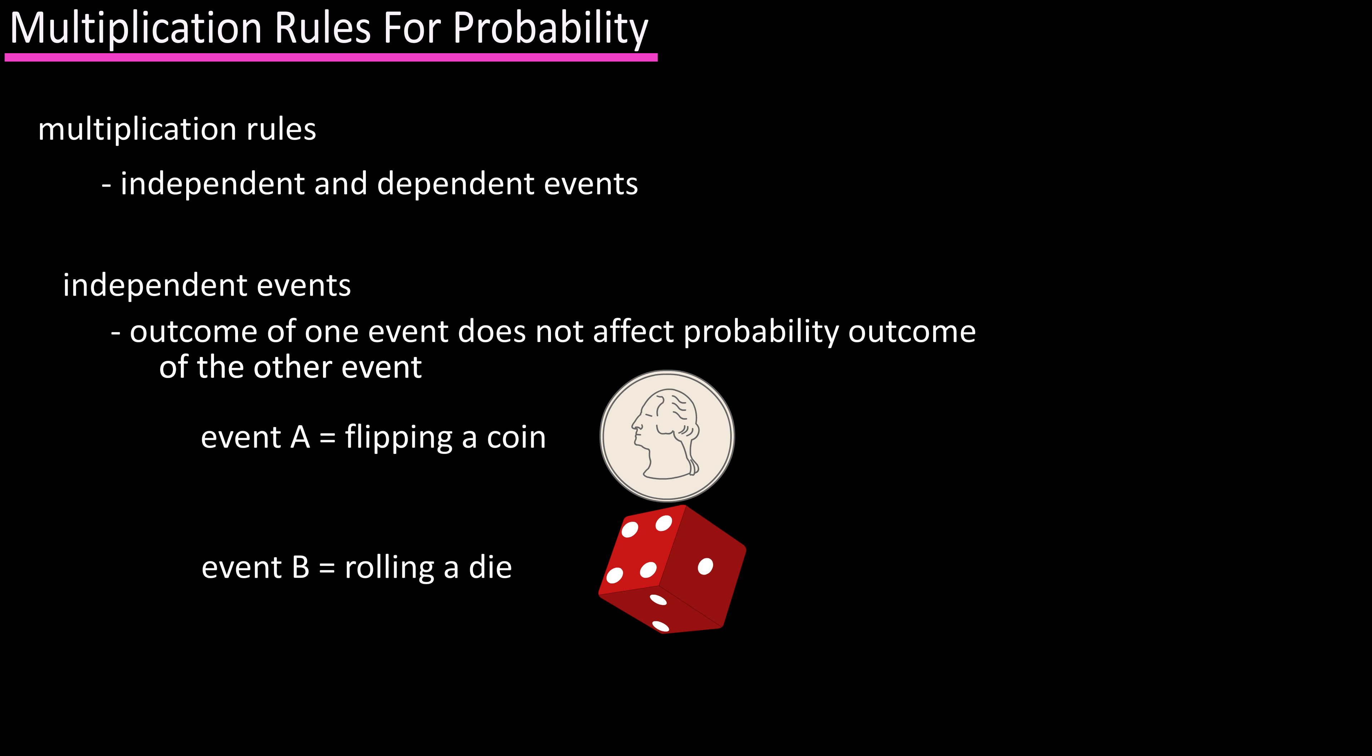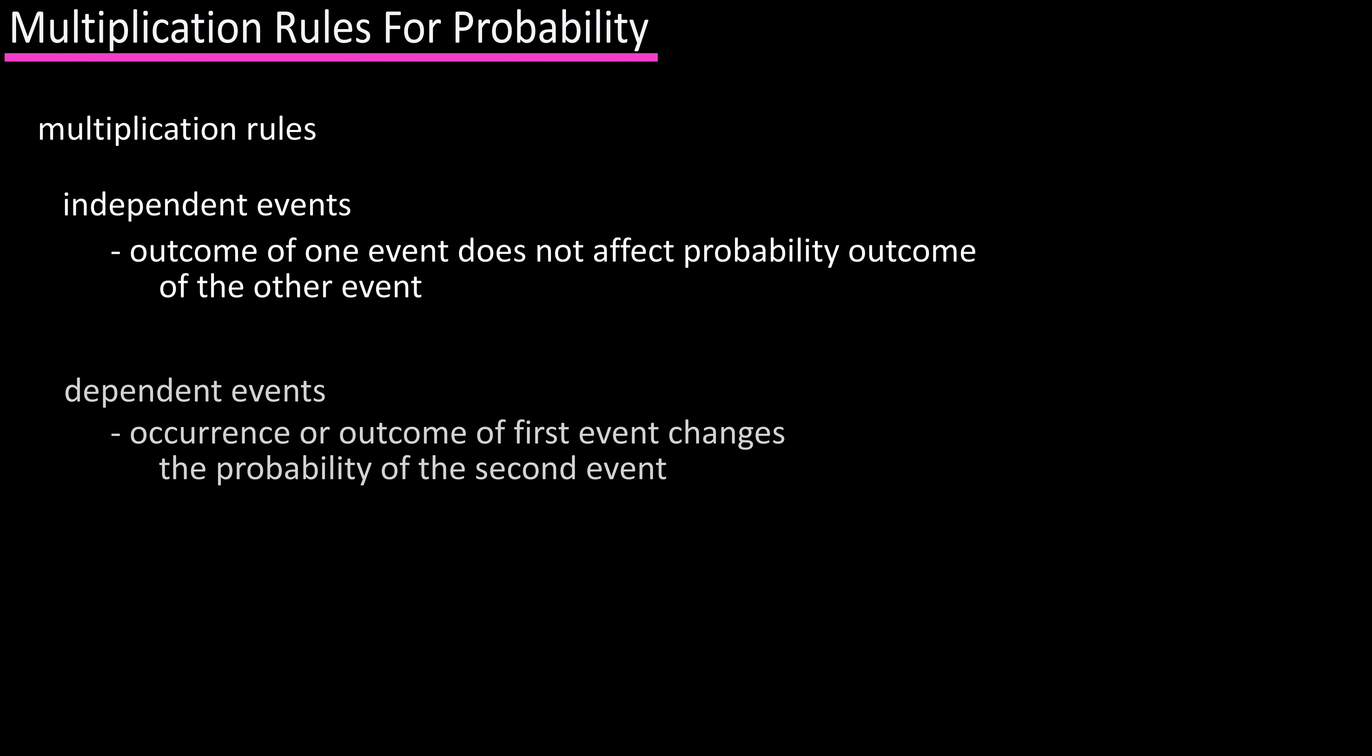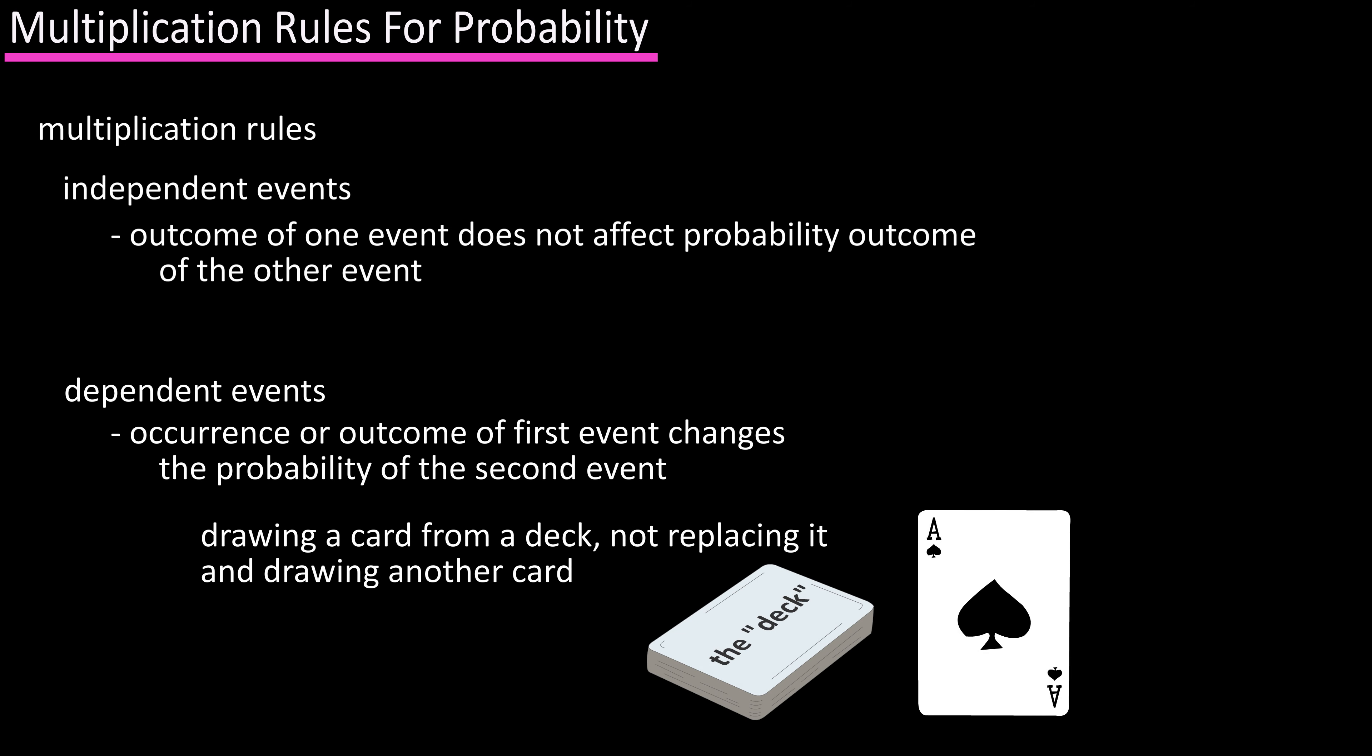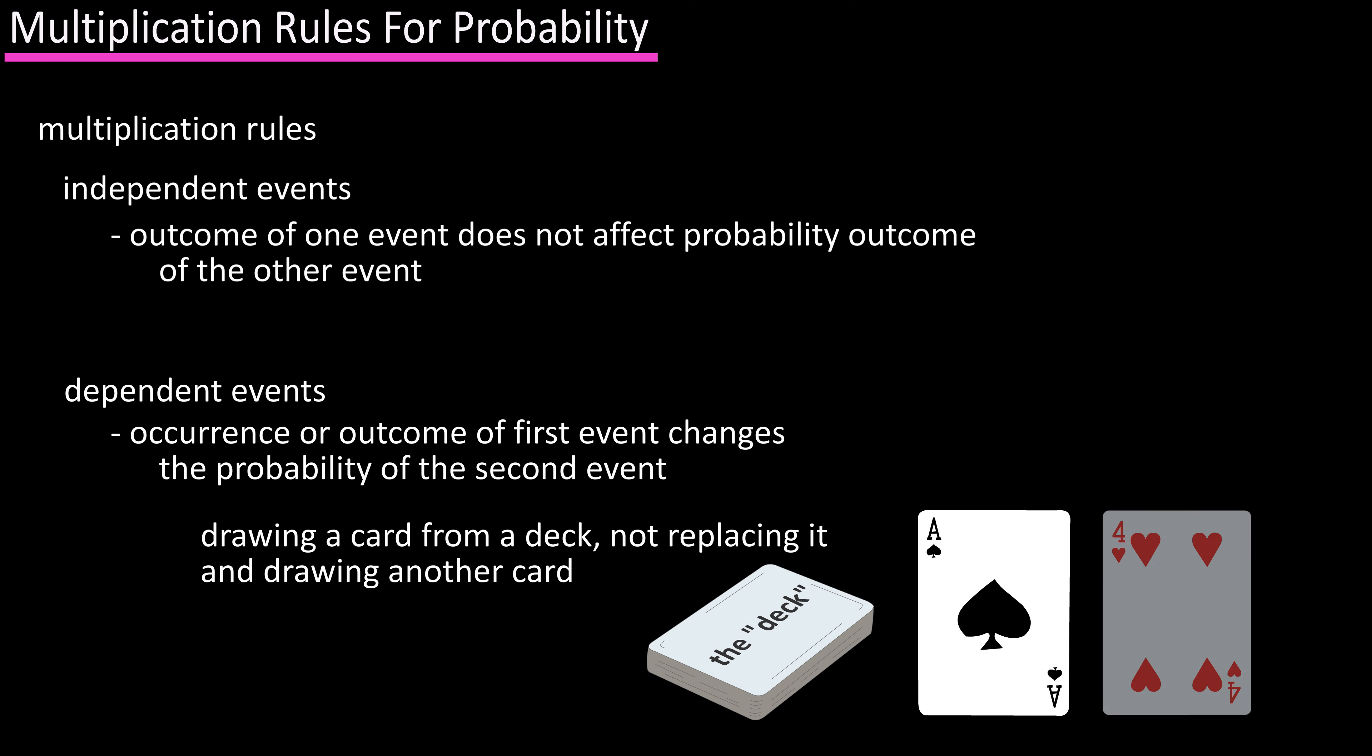For instance, event A is flipping a coin and event B is rolling a die. Whatever happens in event A, flipping the coin, has no effect on event B rolling the die. And dependent events are when the occurrence or outcome of the first event changes the probability of the second event. For example, drawing a card from a deck and not replacing it and drawing another card.